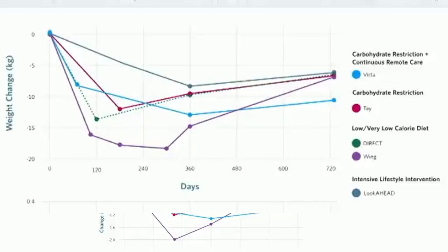And then the blue here in the middle is Virta, and we go down, we stay down at one year, and then as I showed you, a slight weight regain.